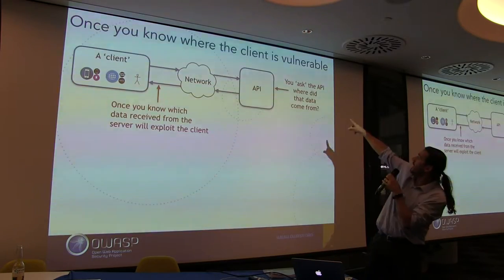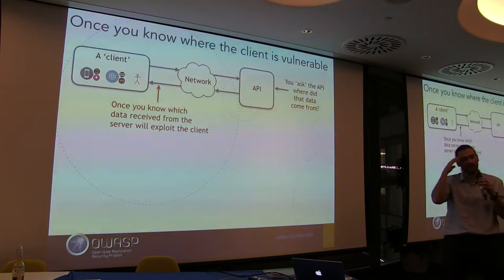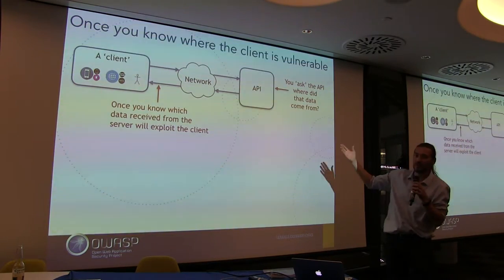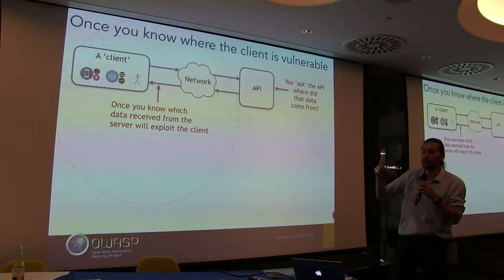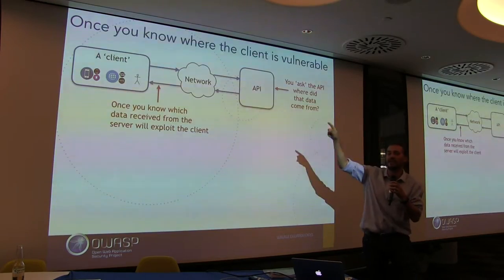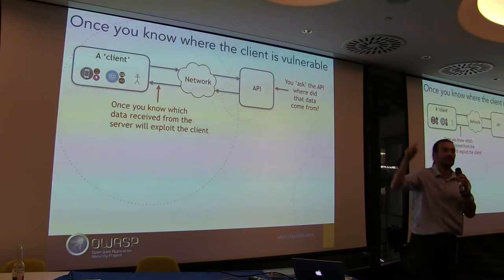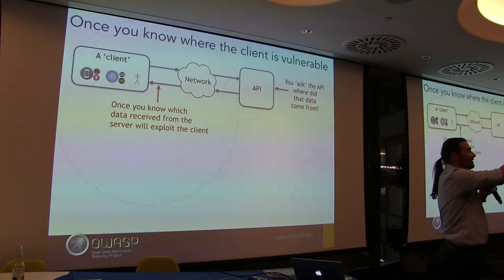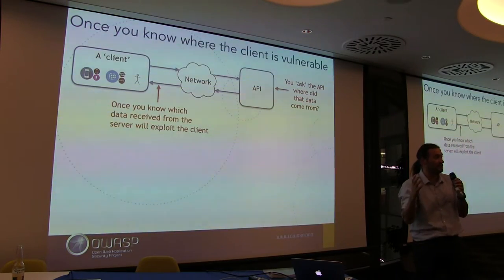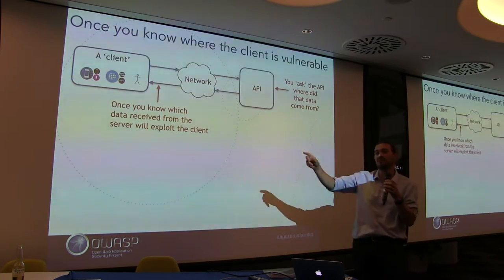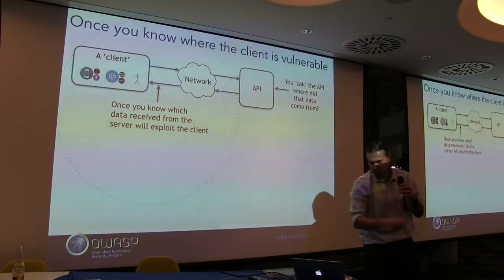Once you know where the client is vulnerable — once you know what data points you can put payloads in — you go to the API and ask: where did that data come from? After they realize what that question means, they go 'I have no idea.' So you do the reverse: you chase it. That URL or HTML rendered in a web view connects to the Android or iOS app, runs all this JavaScript. 'Hey, that came from Reuters.' So some dude at Reuters can put JavaScript that will compromise every single customer you have.